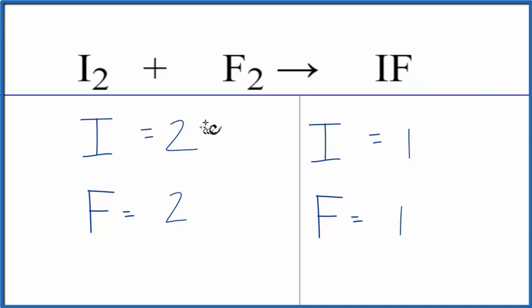So our goal is to have these numbers here be the same as these, and the only thing we can change are the numbers in front. Right now it's not written there, but we assume there's a one in front of each of these. The subscripts, these small numbers here, we can't change those.